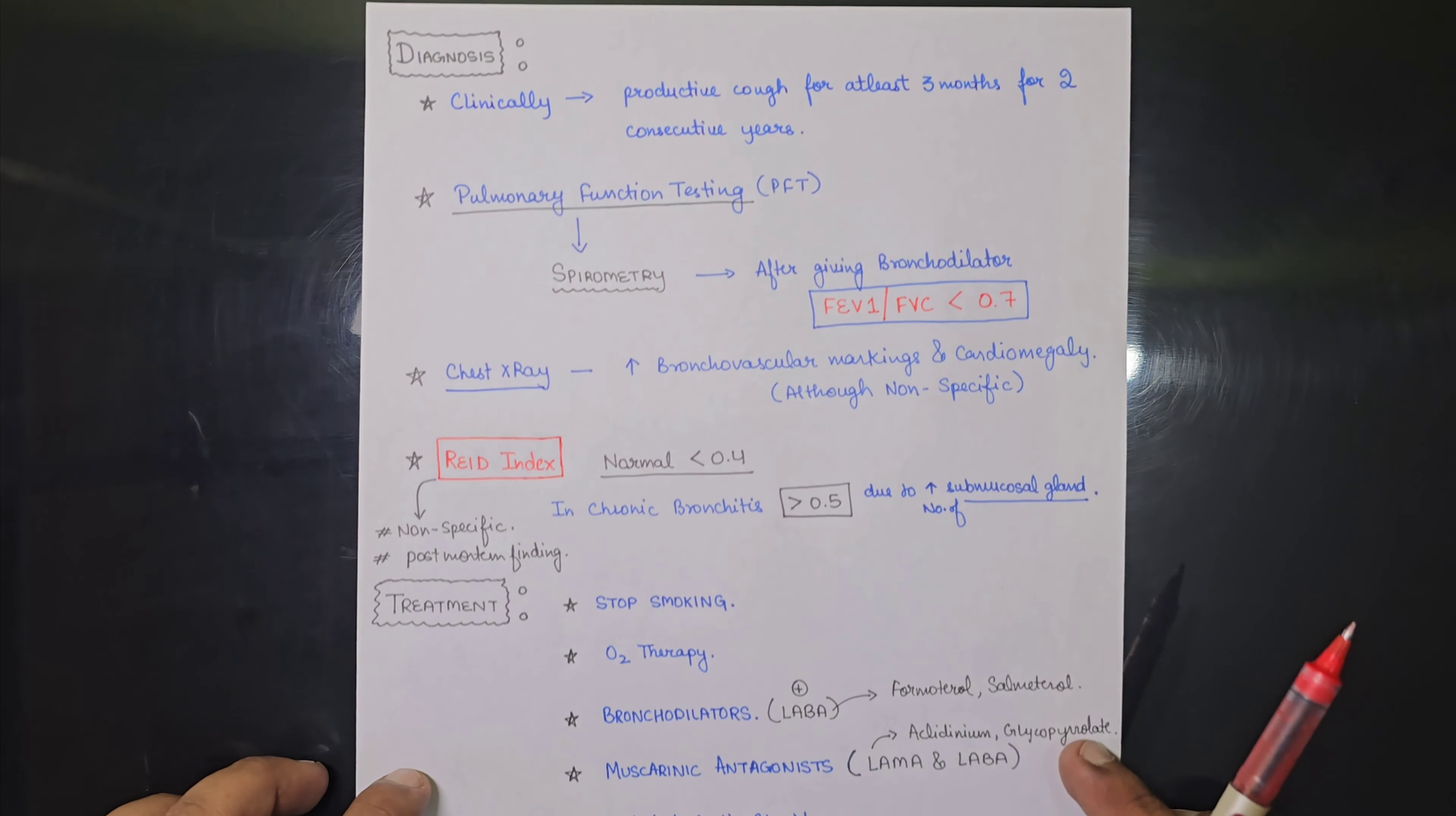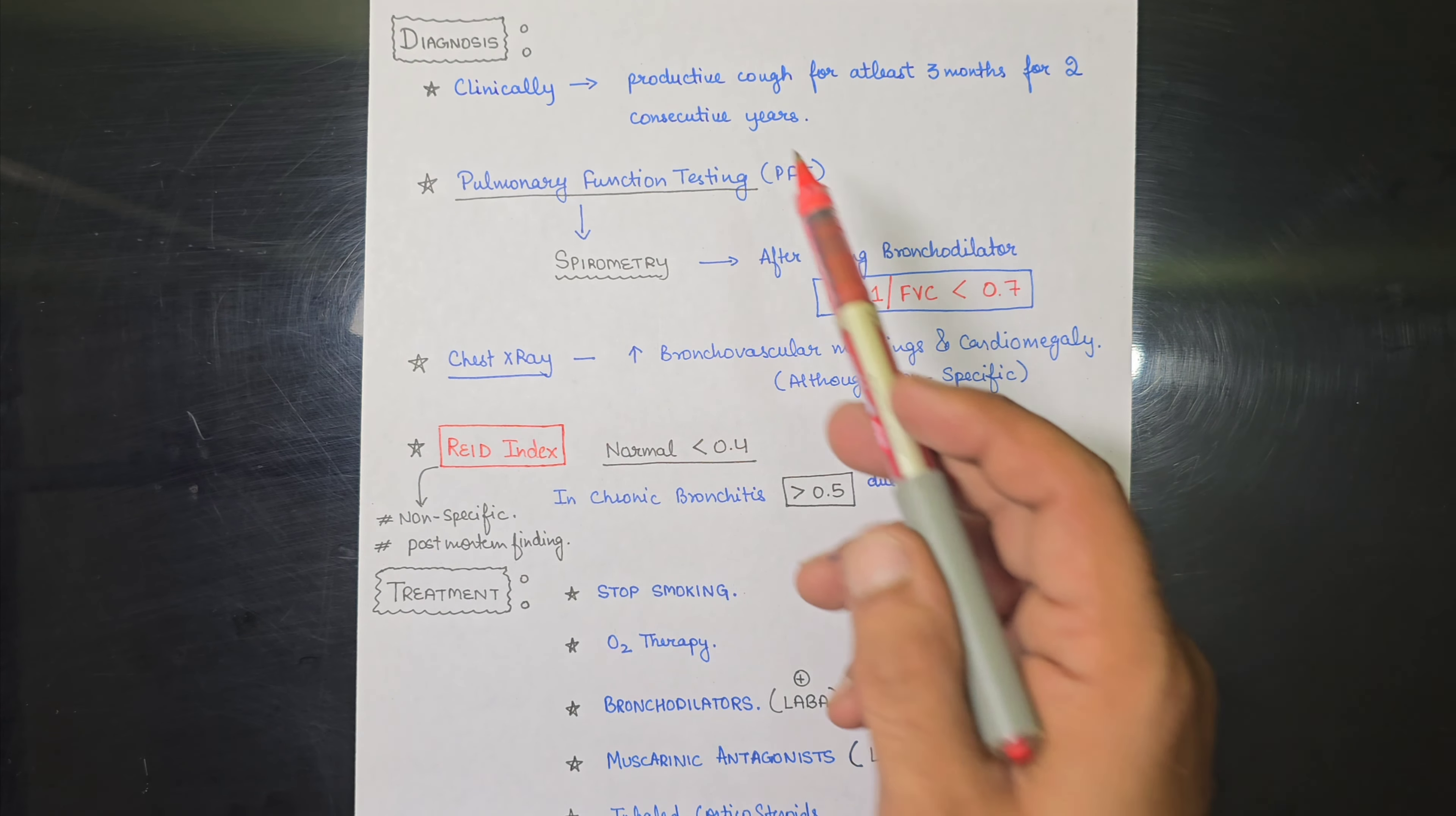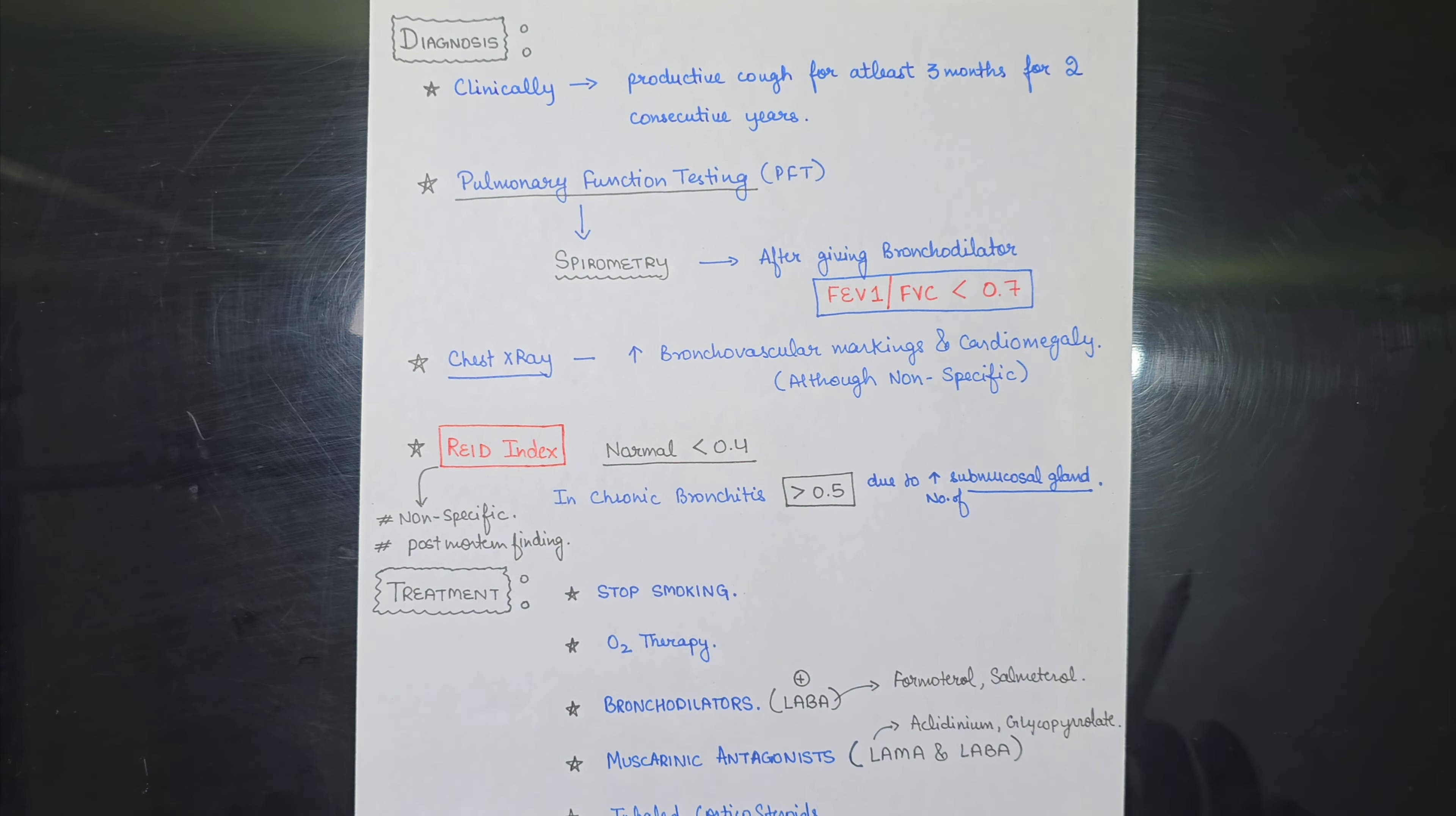So this is all about the pathophysiology of chronic bronchitis. Now let us look at the diagnostic aspect and the treatment of the disease. So diagnosis is basically clinical. Clinically, whenever the patient will come, then we will ask him that in up to what period he is having cough. So the productive cough for at least three months for two consecutive years. If the patient is having more than three months of productive cough from the past two years, then it is diagnosed clinically only.